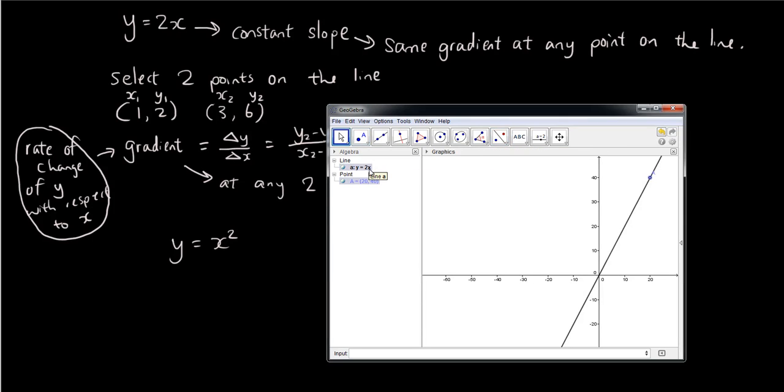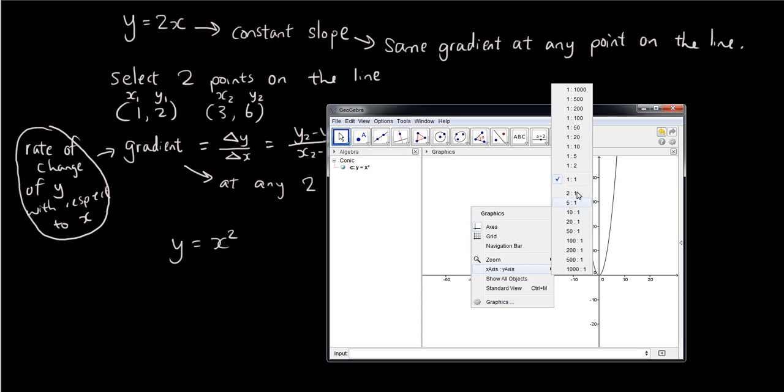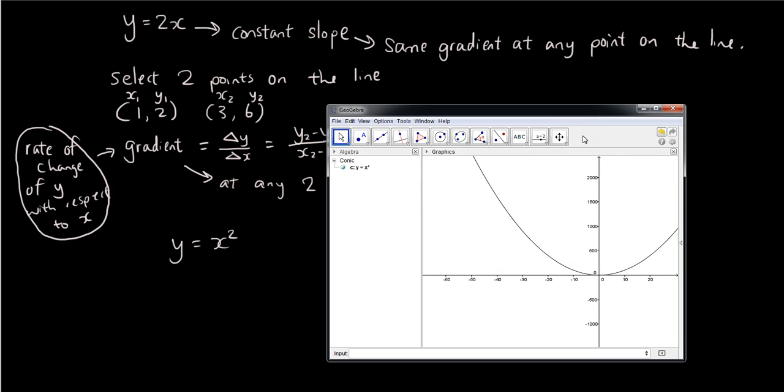If you draw this graph, I'm just going to get rid of my old line and draw y equals x squared. I'm going to change the axis ratio, so use the move tool, click on the back, click on the white space, right click on it and choose x to y axis 1 to let's say 50.